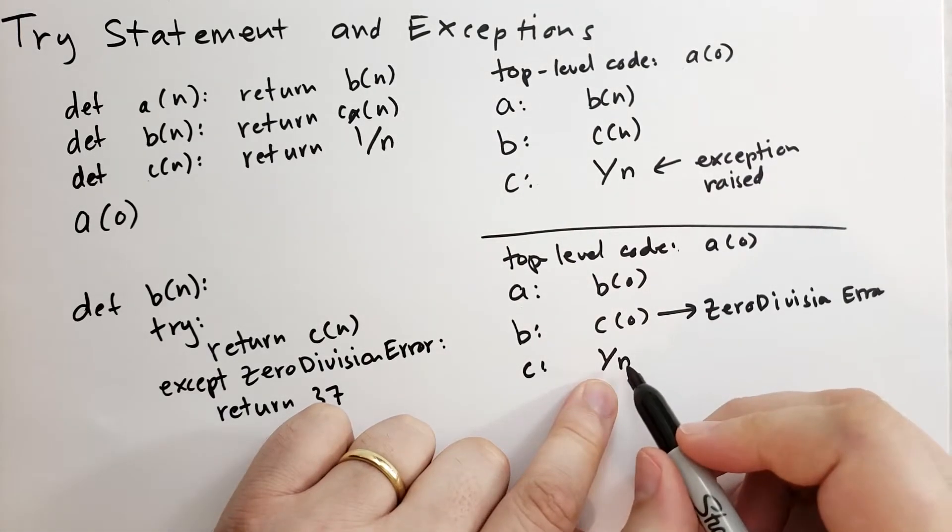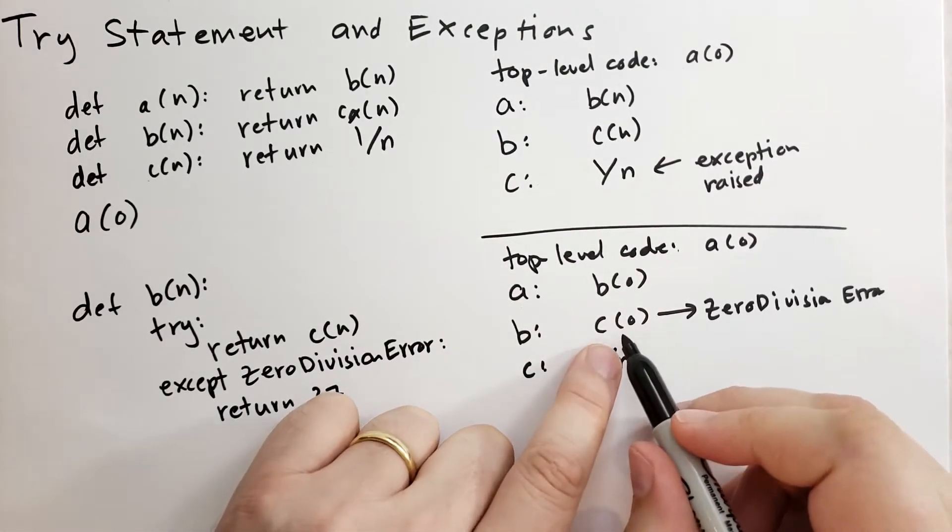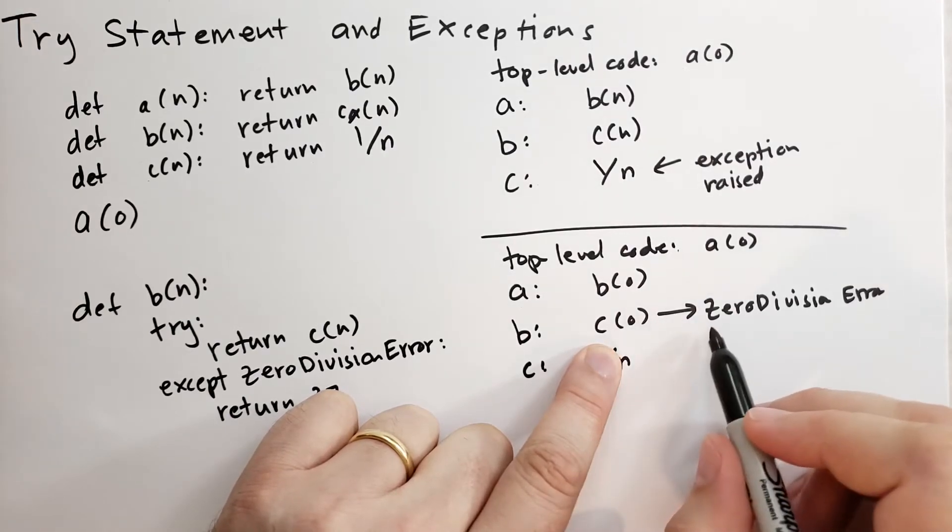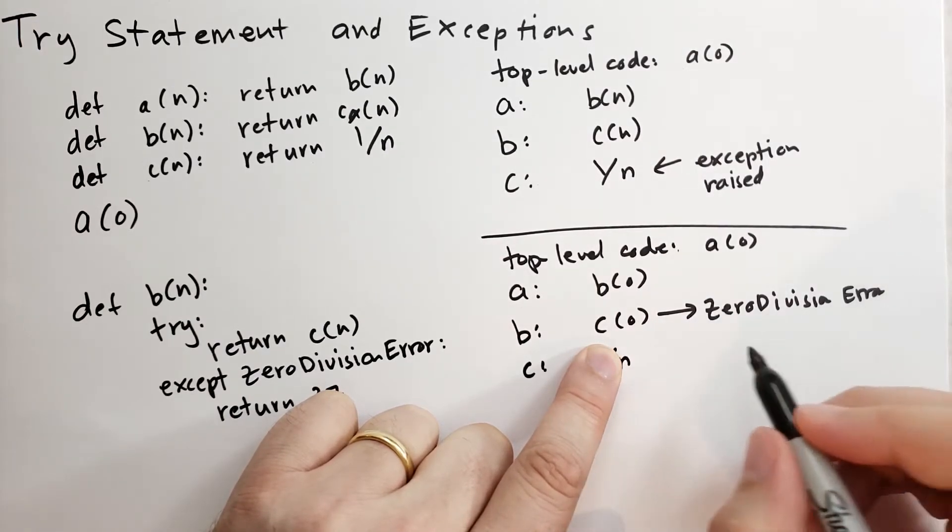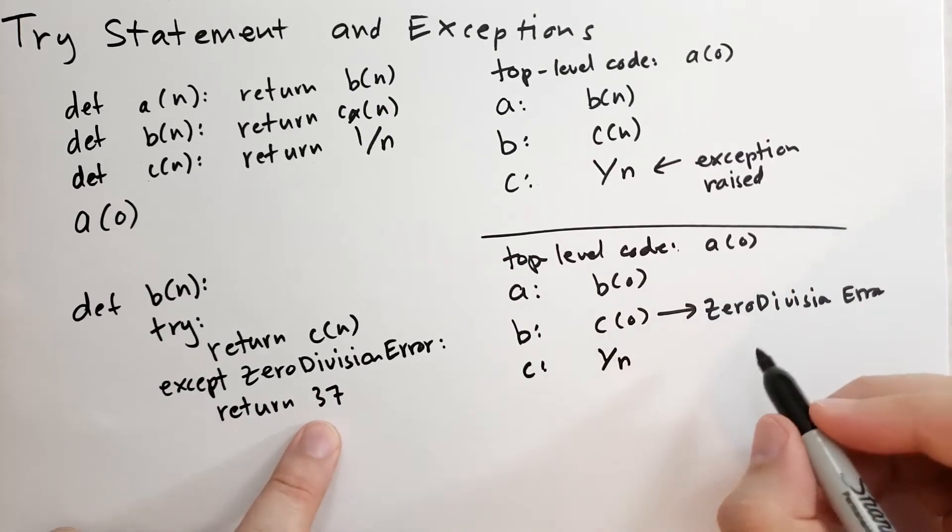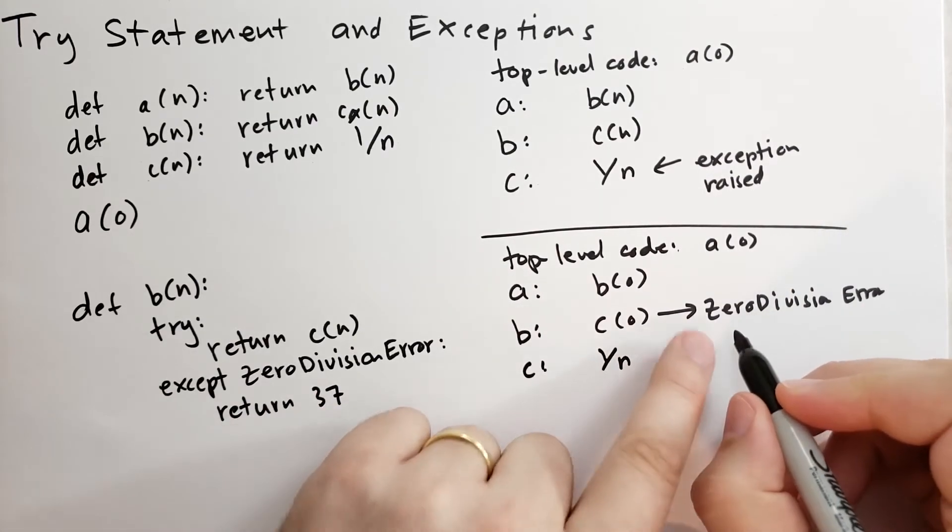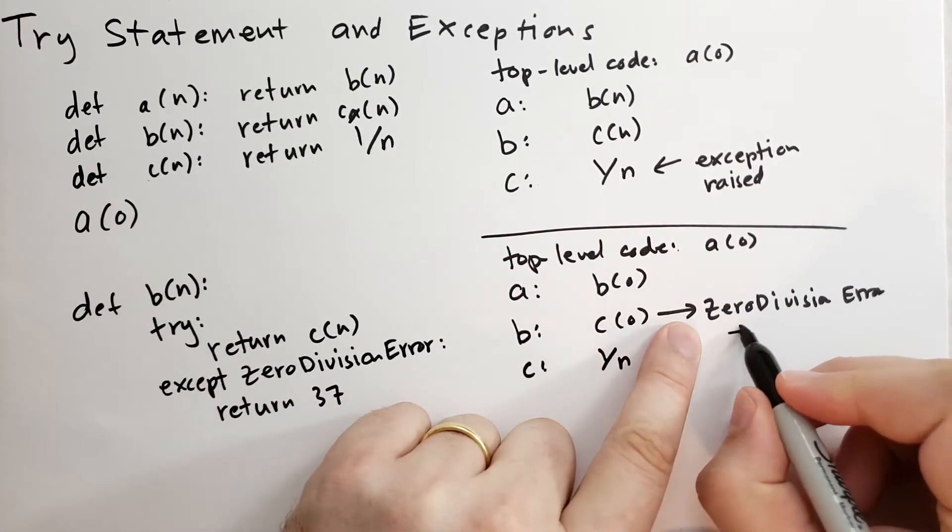When it divides by 0, it raises the zero division error. It looks at the frame directly ahead of it, on top of it, and it sees that there's a handler for the zero division error. The zero division error says return 37 instead. So instead of raising the exception higher, it's going to return 37.